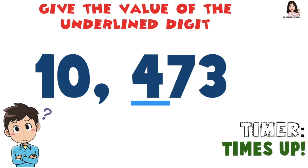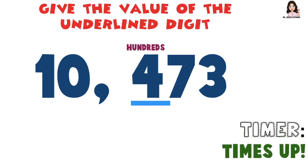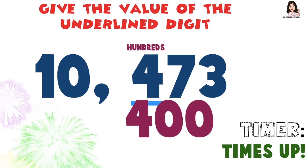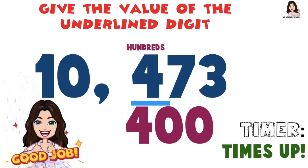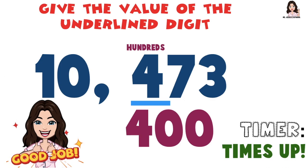Time's up! So what is the value of digit 4 at the hundreds place? That's correct — 400! Good job!